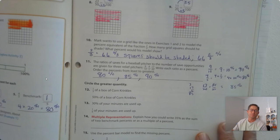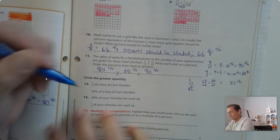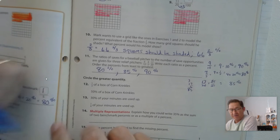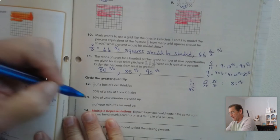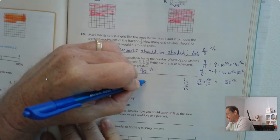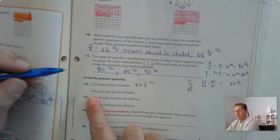Number 12, circle the greater quantity. So I have 1 third, and I have 50%, so they're not in the same comparison. One's a fraction, one's a percent, so I'm going to change the fraction into a percent. 1 third is 33 and 1 third percent, compared to 50%. Well, which one's greater? 50%.